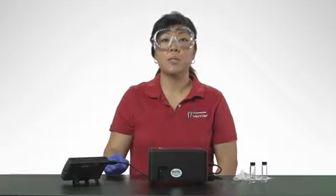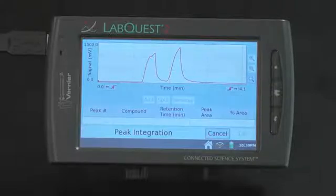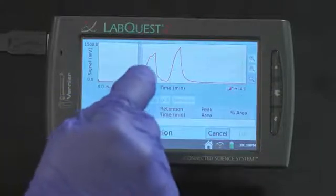To select and integrate the peak, drag across the graph from a little before the peak to a point far enough to the right so that the entire peak is selected. Choose Add.